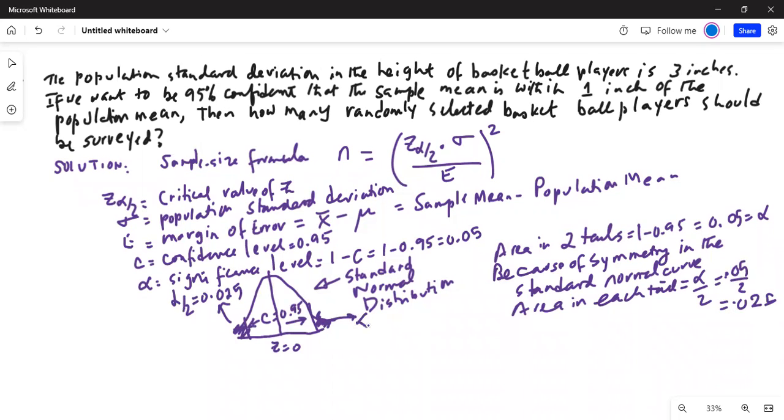This area and this area are also alpha by 2, equal to 0.025. I need this area in the left here because this way I can calculate minus z alpha by 2. This z alpha by 2 is called the critical value because it separates the tail region from the confidence region.